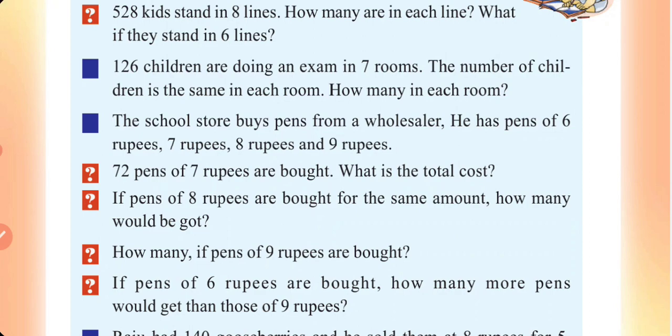The school store buys pens from a wholesaler at prices of 7 rupees, 8 rupees, and 9 rupees. If you have pens at 7 rupees and 72 pens are bought, what is the total cost?